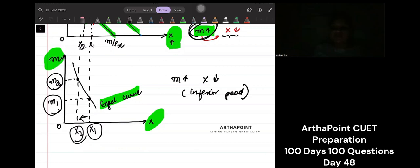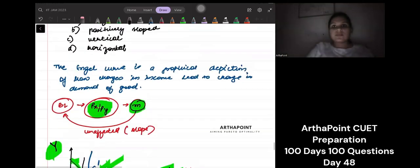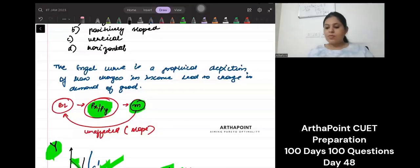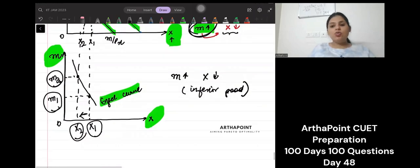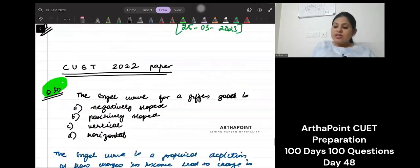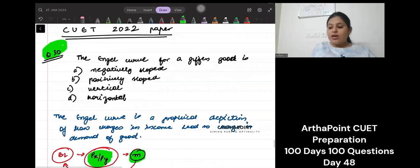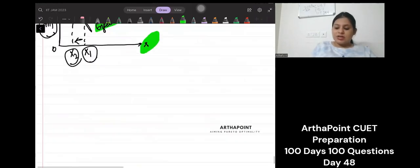What is the answer to this question? The Engel curve will become downward sloping. What is going to be the answer to this question? The Engel curve for Giffen good. Now we will talk about Giffen good.